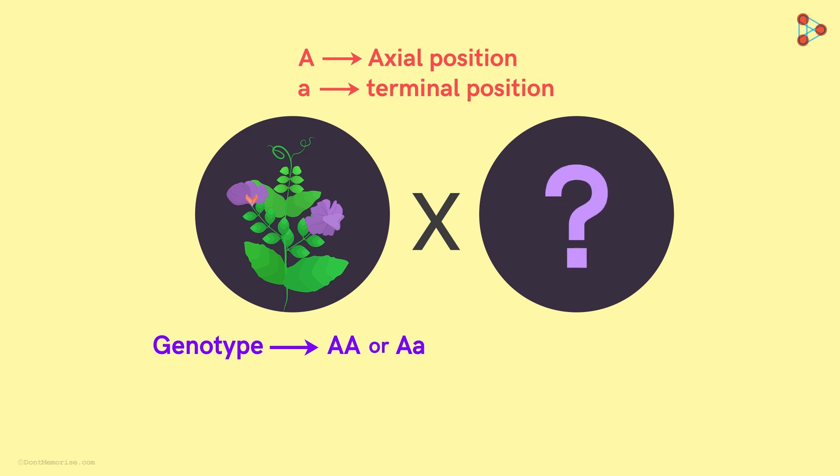So what plant will we opt for in order to cross? The best choice will be a plant that is recessive in phenotype! In this case, we will opt for a plant with terminal flowers!